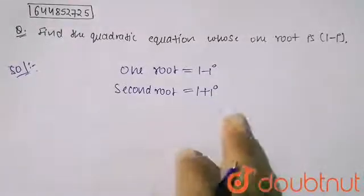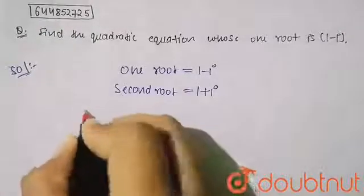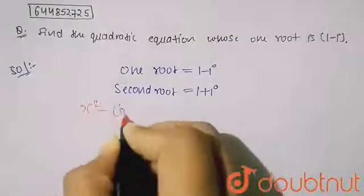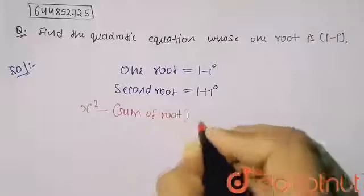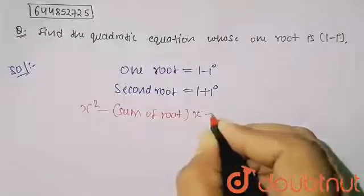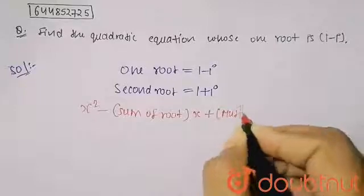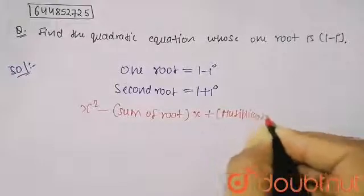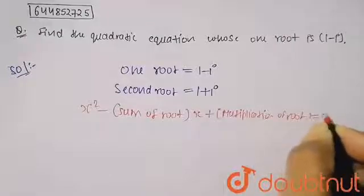And my quadratic equation will be x² minus—here it is sum of roots—sum of roots times x, plus multiplication of roots. And this will be equal to zero.